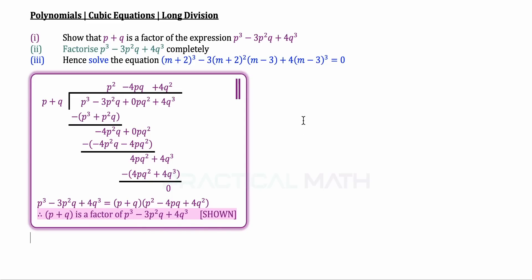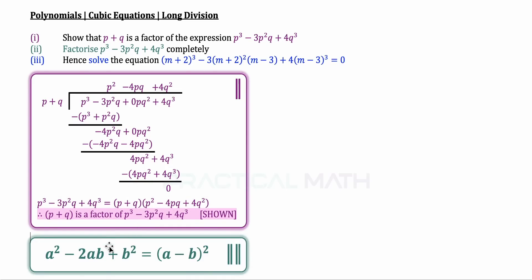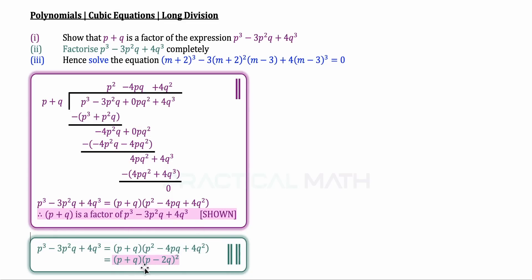Moving on to part 2, we need to factorize the same cubic expression completely. This means factorizing the quadratic p squared minus 4pq plus 4q squared. Since it consists of p squared, q squared, and the middle term pq, we can apply the special algebraic identity: A squared minus 2AB plus B squared equals open bracket A minus B close bracket squared. Using this identity, the full factorization is p plus q multiplied by open bracket p minus 2q close bracket squared.